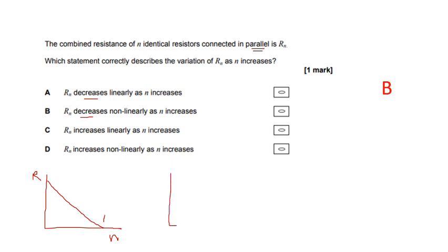You should know a little trick. If you put two resistors in parallel, the total is half. If you put three resistors in parallel, the total is a third. Four resistors in parallel, equal resistors, it's a quarter. So resistance against number of resistors is going to go down like that, like a curve. So the answer is B.